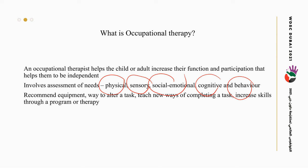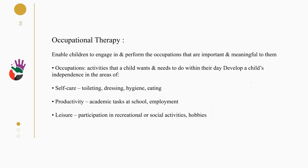This may involve different types of exercise and activity, or we can modify or alternate some approaches, like energy conservation and work simplification. The role of OT is enabling children to be engaged and perform the occupations that are important and meaningful for them.